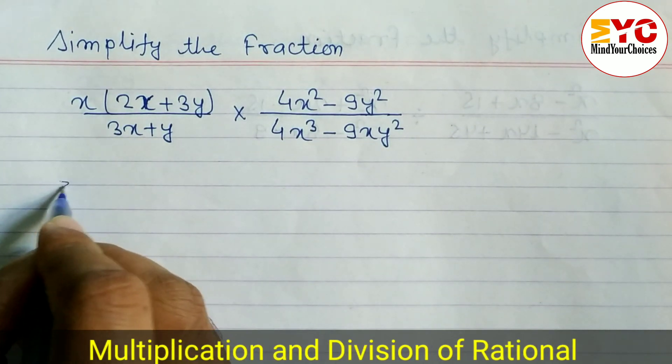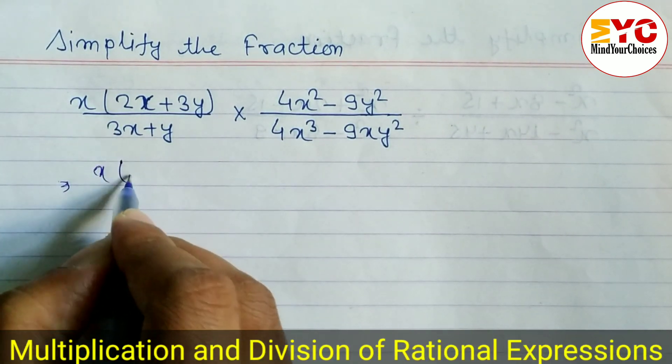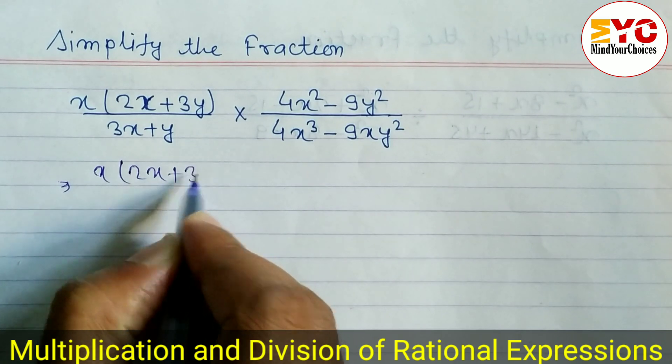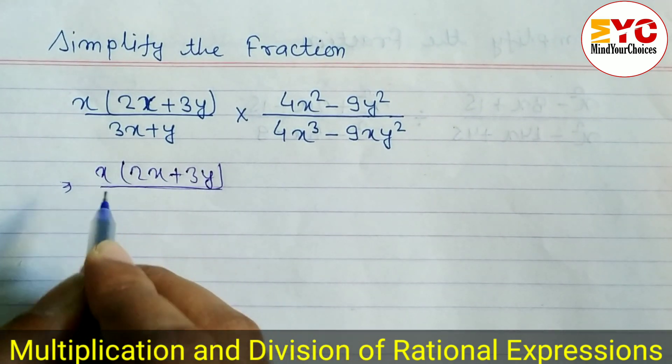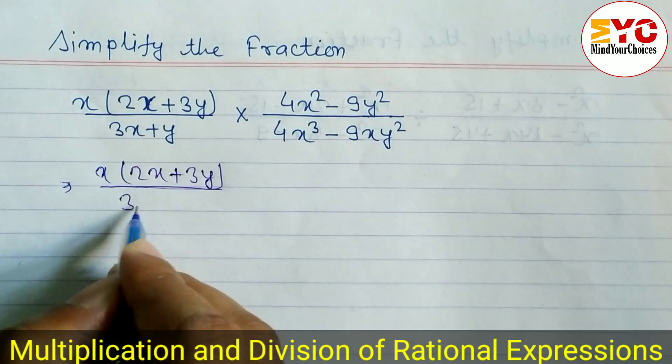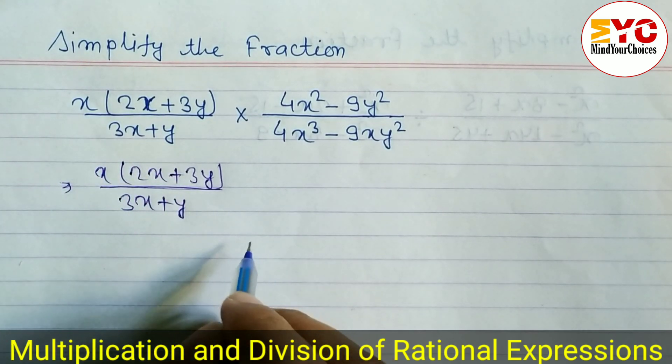You can see here we have a question. So let's start. Write on 2x plus 3y. Because we don't have any common factor, we cannot factorize. And in the denominator also 3x plus y, because this one is linear we cannot factorize, we cannot take common into.